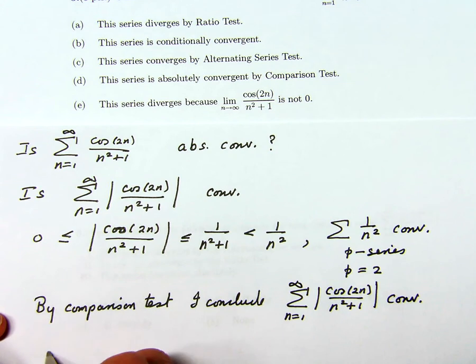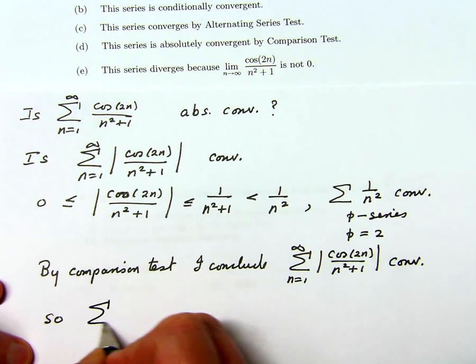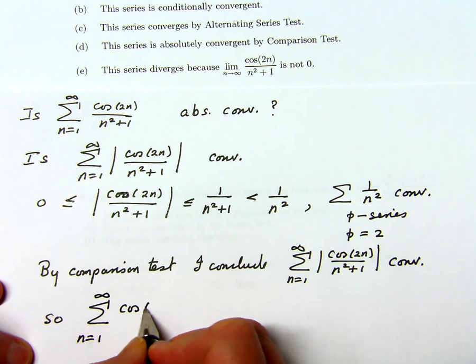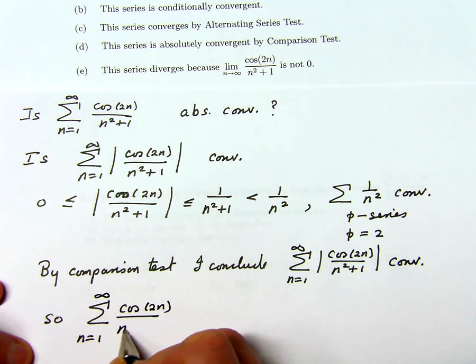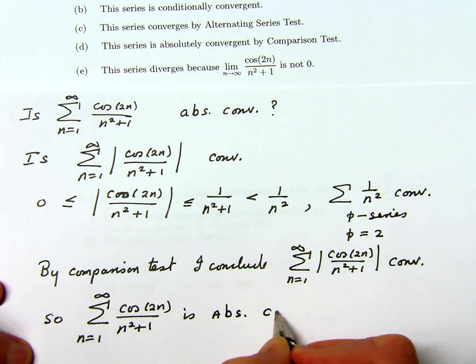So the sum from 1 to infinity of cosine 2n over n squared plus 1 is absolutely convergent.